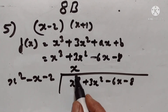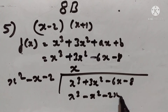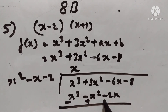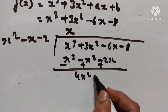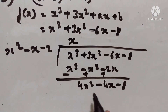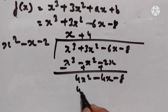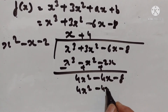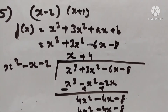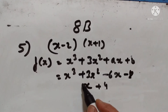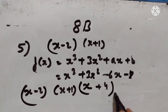Dividing x³ + 3x² - 6x - 8 by x² - x - 2: x into (x² - x - 2) gives x³ - x² - 2x. To get the remaining terms, we add 4(x² - x - 2) = 4x² - 4x - 8. So the third factor is x + 4. The factors are (x - 2), (x + 1), and (x + 4).